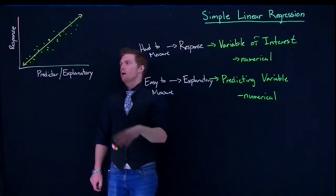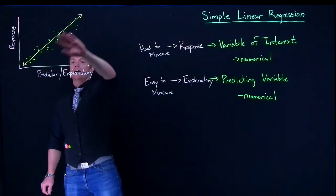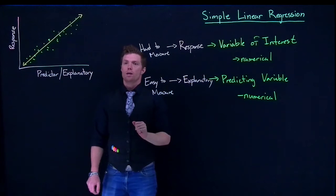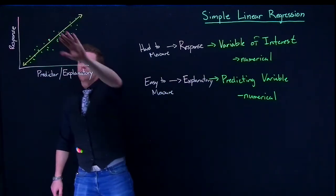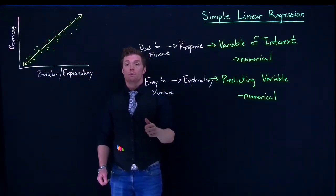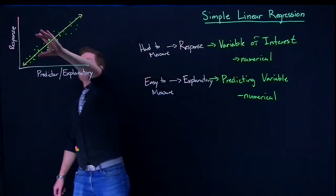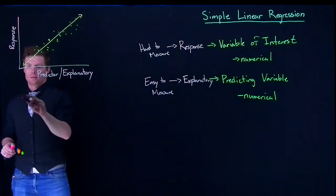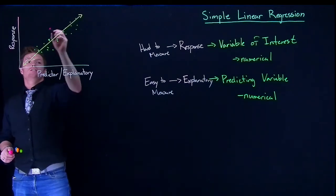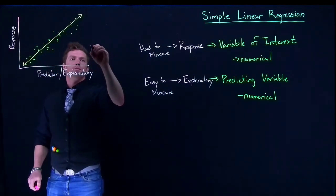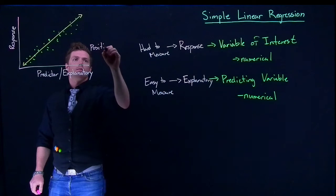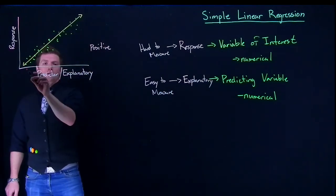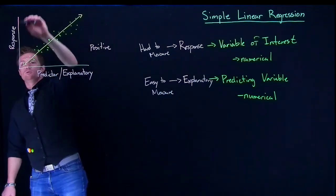Now not only can this be a positive relationship, we can also find things that have a negative relationship. Those would both be significant results. Or we might find something where the data, this would be a positive relationship. As the predictor increases, the response increases.